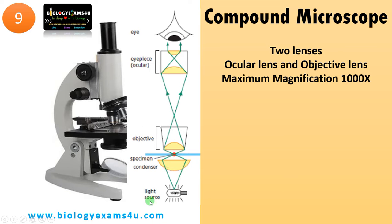Let us see how this compound microscope works. There is a light source, then the light passes through the condenser, which focuses the light onto the specimen. The objective lens magnifies the specimen image, then further magnification is done by the eyepiece. So magnification is a product of the magnification of the eyepiece and the objective.